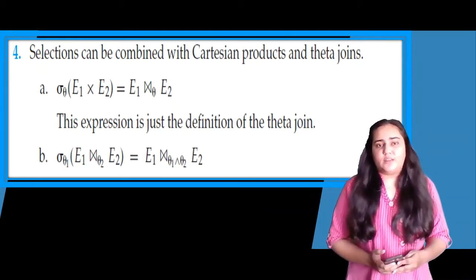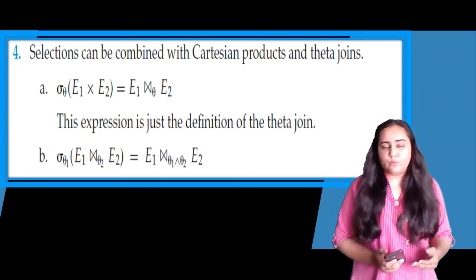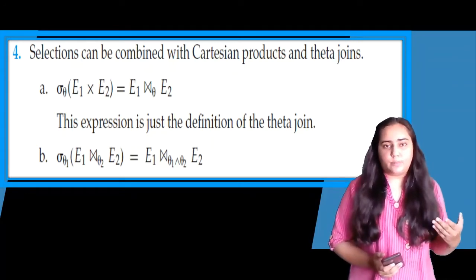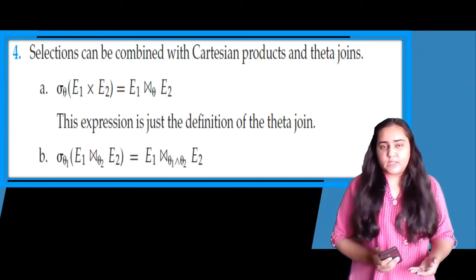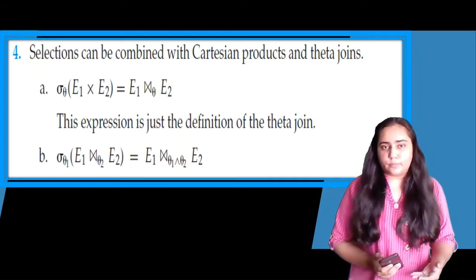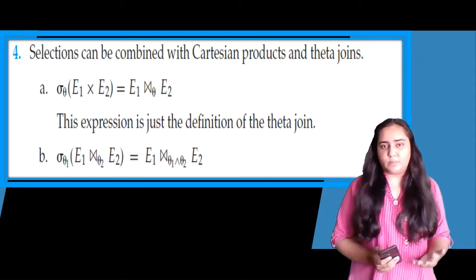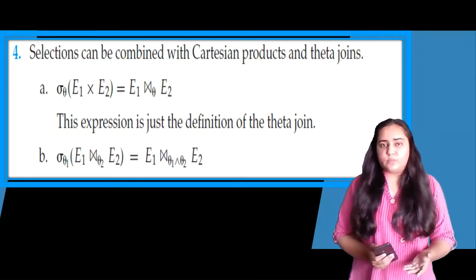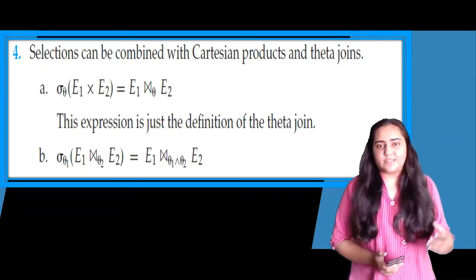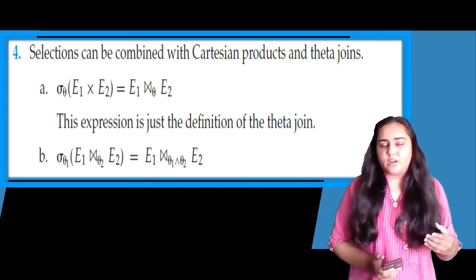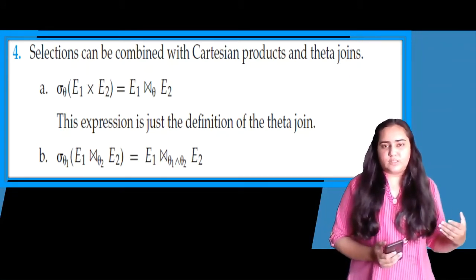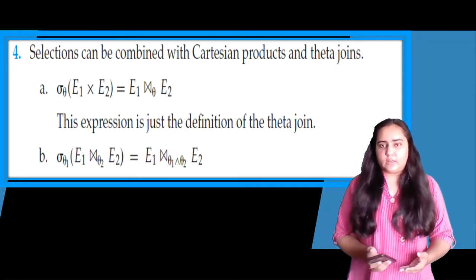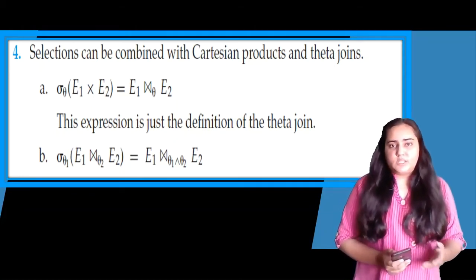In part B, you have a select operation with condition theta 1 applied to a theta join that already has condition theta 2 between tables E1 and E2. This can be transformed by combining the two theta conditions with an AND operation, giving E1 theta-joined using theta 1 AND theta 2 with E2.